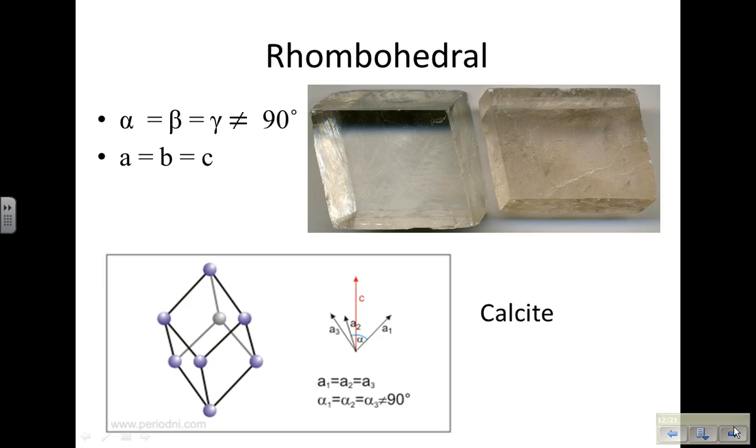In a rhombohedral crystal, and calcite expresses a rhombus, your alpha, beta, and gamma are not equal to 90 degrees, and your sides are equal.